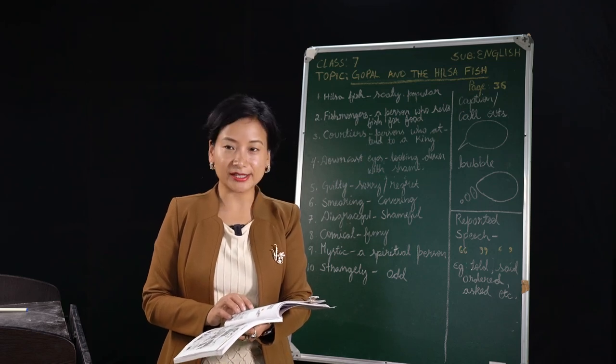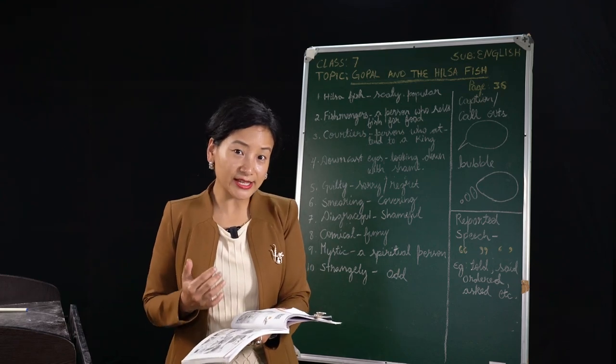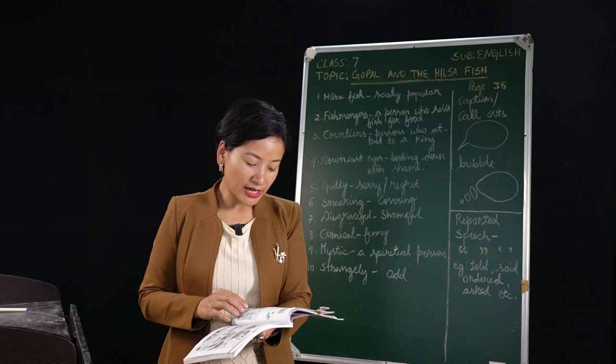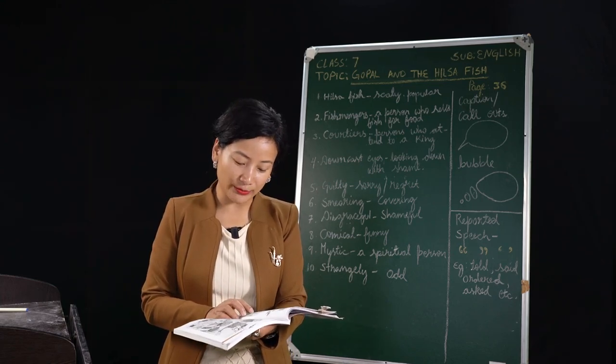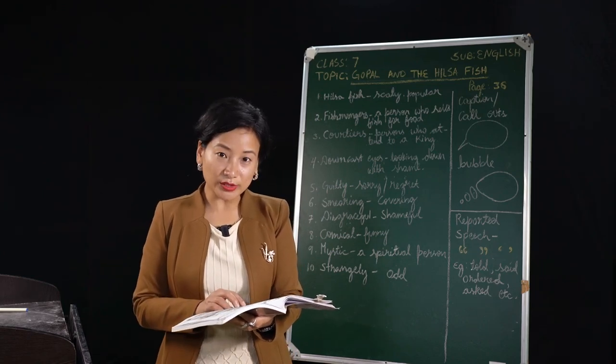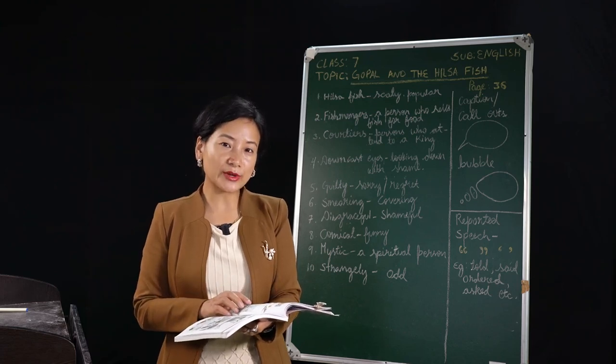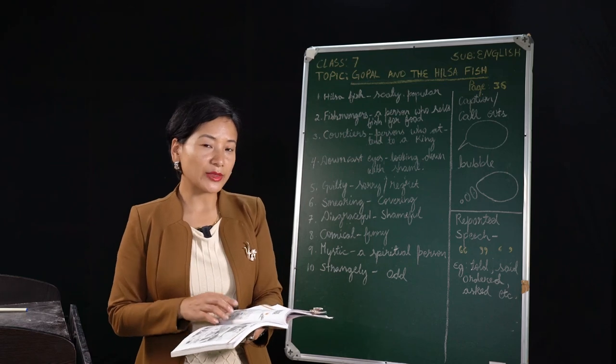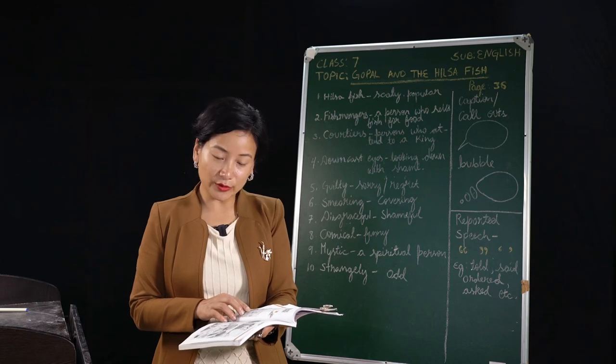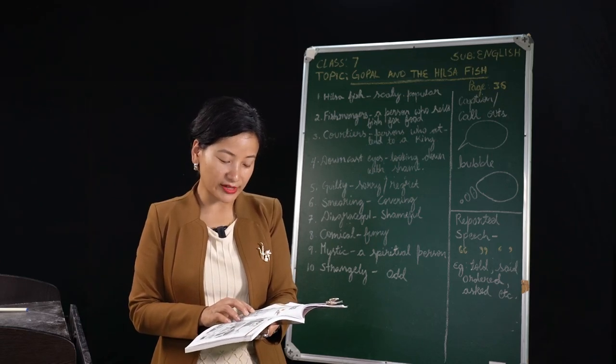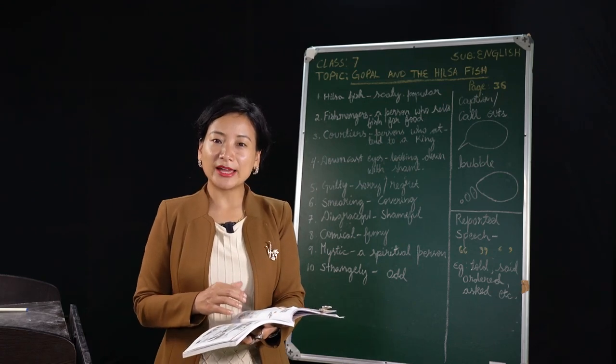We can see in the picture some fishermen trying to catch hilsa fish. Fishmongers sold nothing but hilsa fish. So even in the market the fishmongers are selling nothing except hilsa fish. And they are saying, come, buy, the price of hilsa is down today. So that is what is going on in the market. On the other hand, householders could talk of nothing but hilsa fish. Householders here we can say the head of the house, maybe the wife or the person who usually cooks.